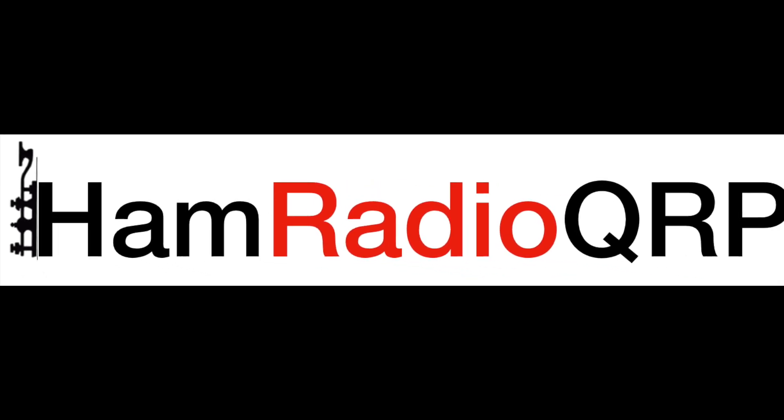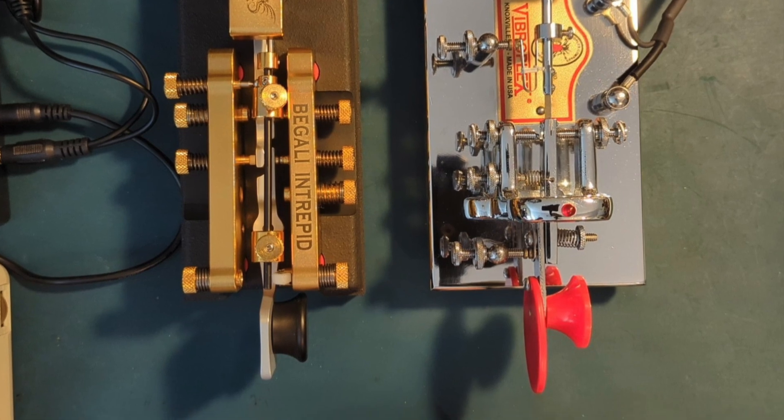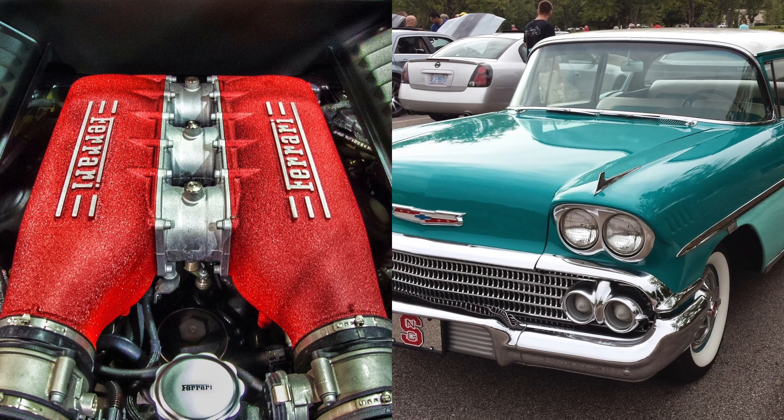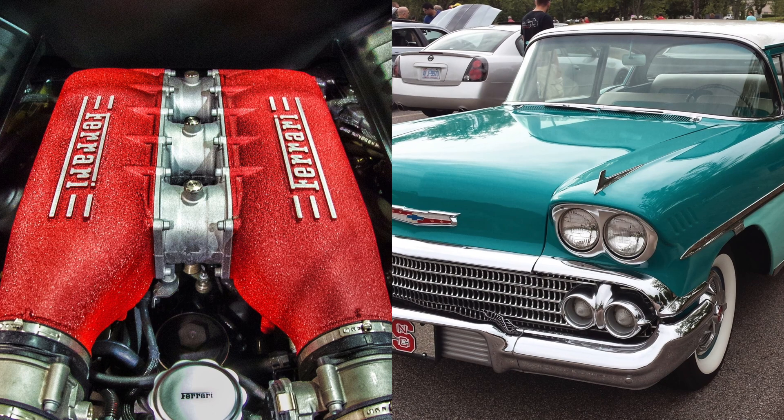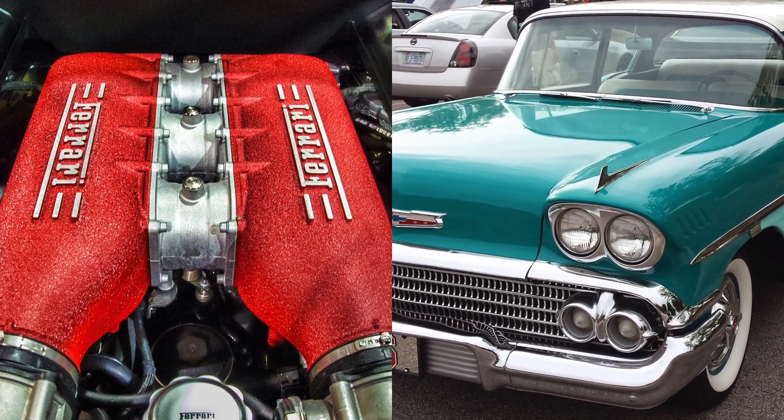Welcome to Ham Radio QRP. Today we compare a Pagali Intrepid bug to a Vibroplex bug. This is a bit like comparing a 1950s American car with tail fins to a Ferrari. They each have their charms.